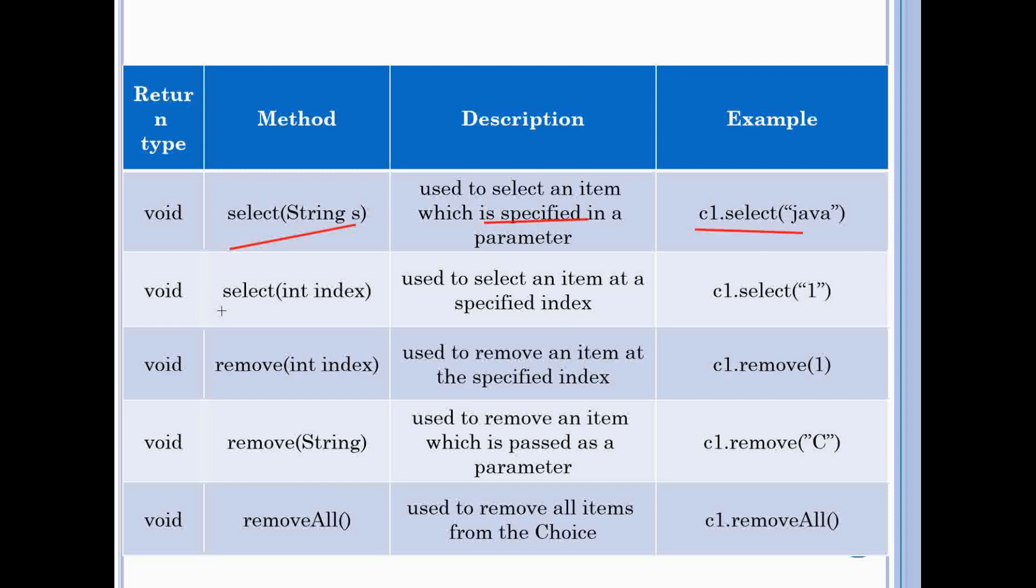Eighth method is select with integer parameter which is used to select an item at a specific location. This is an example of this method. These are the remove methods in which first is used to remove item at a specified index. Second is used to remove item which is passed as a parameter. And last method is used to remove all elements from the choice.